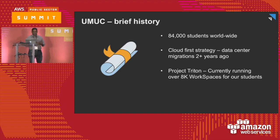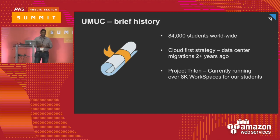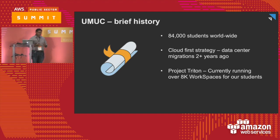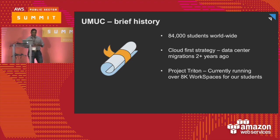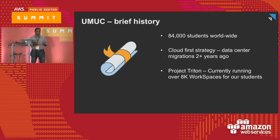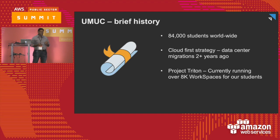UMUC has been with Amazon for about three or four years. We've adopted a cloud-first strategy — anything we do has to run in the cloud. Our first foray was shifting our five data centers, consolidating, and moving all services into the cloud. Our latest project, internally called Project Triton, is providing students a desktop experience so they can run any applications required for their courses. This project was completed within about four months, completely automated — taking enrollment data and providing workspaces and deploying applications based on that enrollment data.